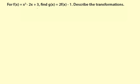So we're talking about the transformation from f of x to g of x, and g of x is 2 f of x minus 1. g of x equals 2, and then times x to the third minus 2x plus 3,